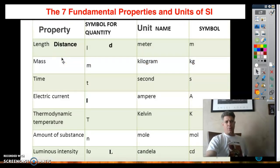So the seven basic properties are length, or distance as we'll refer to it in physics class, mass, time, electric current, temperature, the amount of a substance, or how bright a substance, luminosity.